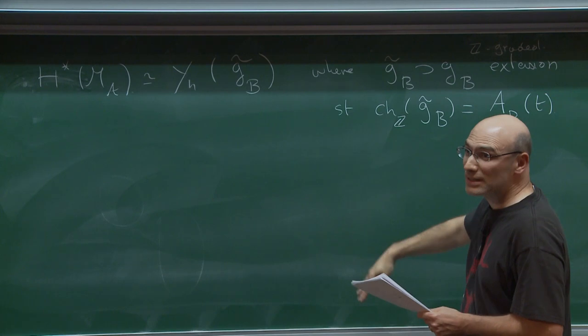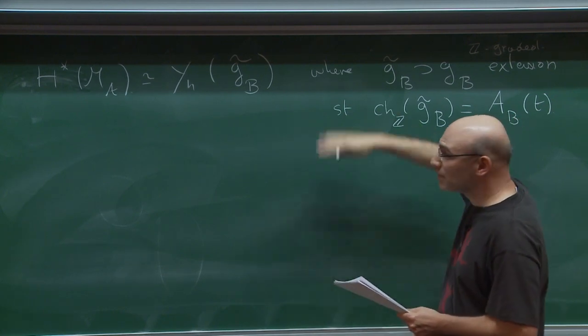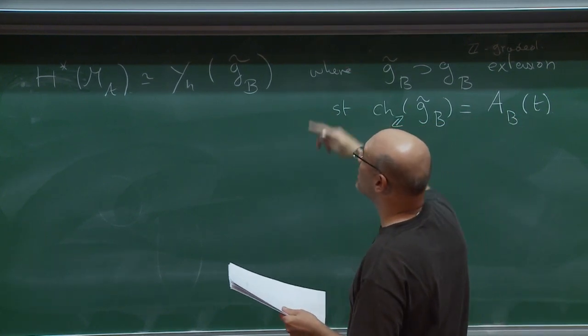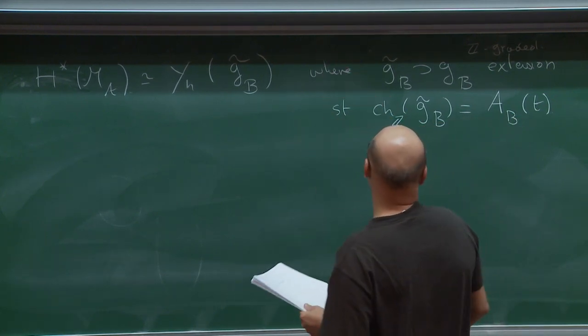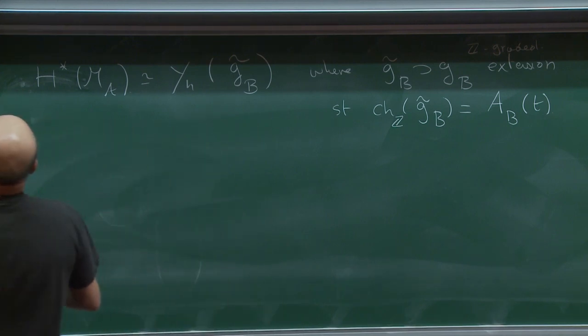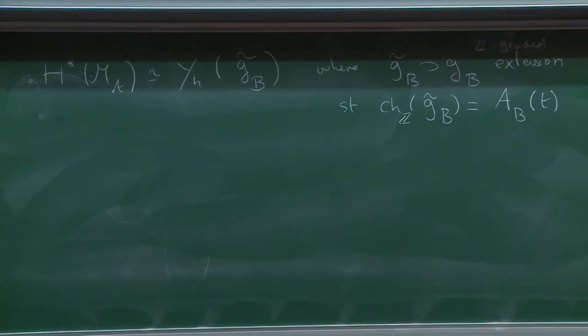I'll now run this for the case of coherent sheaves on the curve and see what this suggests.